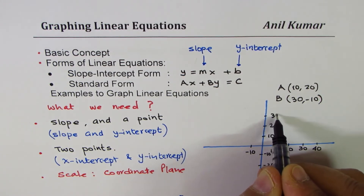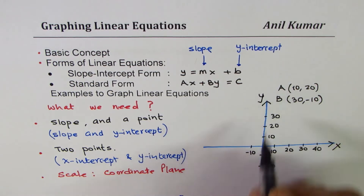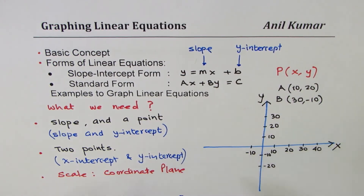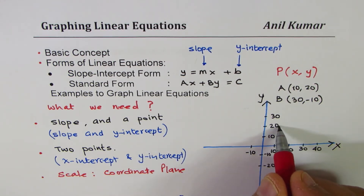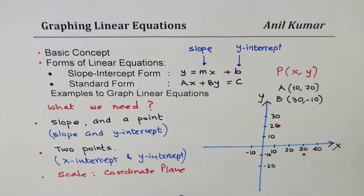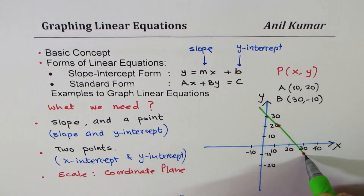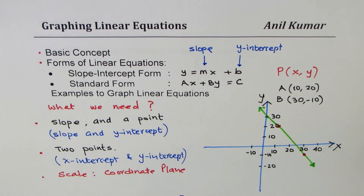The horizontal axis is the x-axis where the first coordinate goes, and the y-axis is the vertical axis. Any point P in general is written as (x, y). For point A at (10, 20), we go 10 units to the right and 20 up. For B at (30, -10), we go 30 right and 10 down. To graph a linear equation, join these two points with arrows in both directions, since a line extends in both directions.